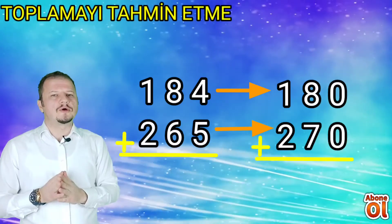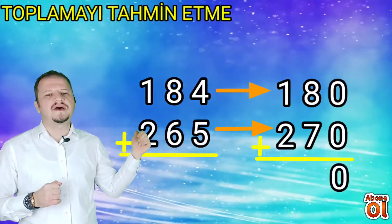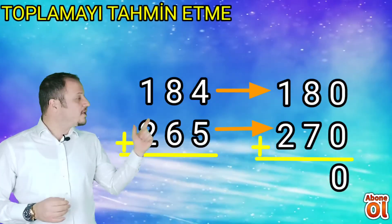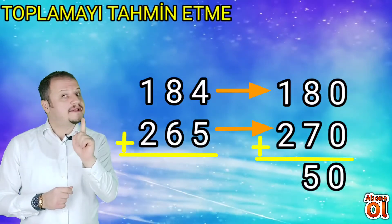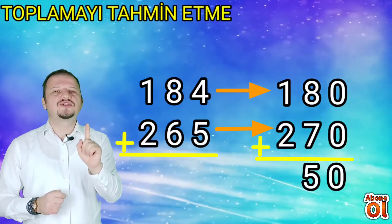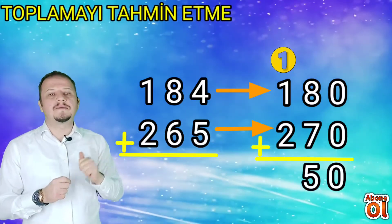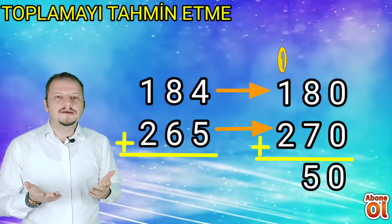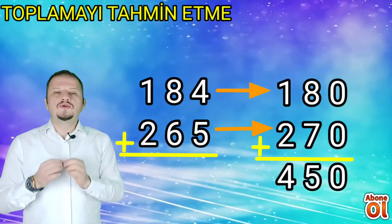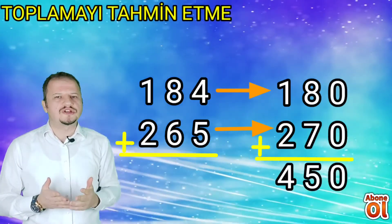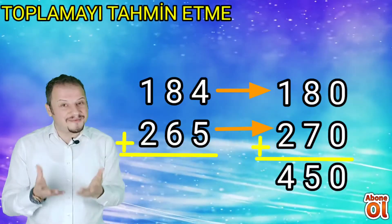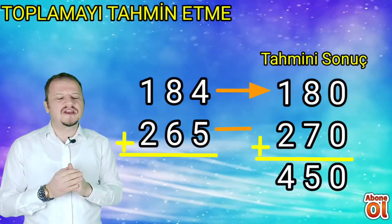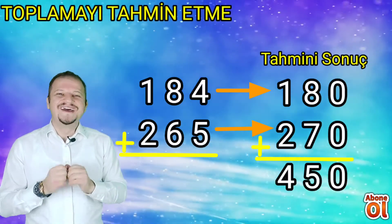180 ve 270'i toplayalım. Sıfırları aşağıya indiriyoruz: 0, 0 daha 0 eder. 8 10'luk, 7 10'luk daha 15 eder; 15'in 5'ini yazıyoruz. Elde var bir 100'lük, 100'lüğü de diğer basamağa aktarıyoruz. 2 100'lük, 1 100'lük daha 3, bir de elde vardı: 400'lük eder. 180 ve 270 topladığımızda tahmini sonuç 450'dir. Tabi bu tahmini sonuçtur, gerçek sonuç değildir. Şimdi işlemimizi gerçekleştirelim ve tahminimize ne kadar yaklaştığımızı bulalım.